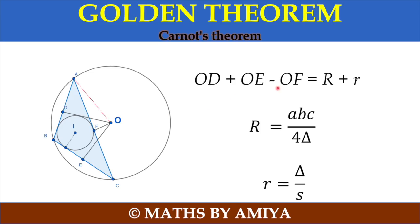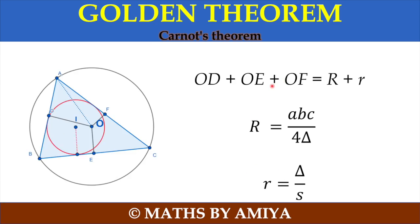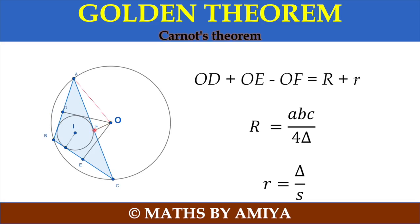So please mind it, minus OF, why? Because it is outside the OF from the longest side. Capital R circum radius and small r in radius remains the same. Only the change is the plus sign. If you are inside, then everything should be plus. If you are outside, then the perpendicular distance on the longest side should be minus.